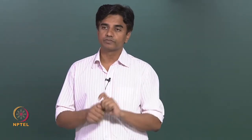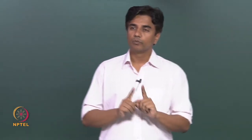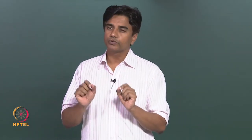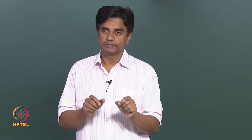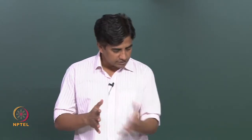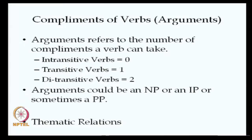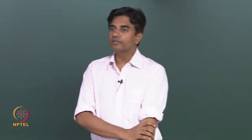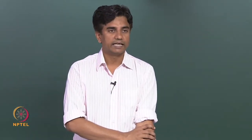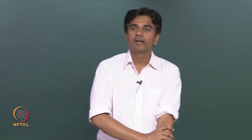Moving ahead with those components, when we refer to the complements of a verb — that is, the object of a verb — that is called an argument. The term 'argument' refers to the complement of a verb. Looking at the distribution: intransitive verbs do not have any argument, transitive verbs have one, and ditransitive verbs have two arguments.